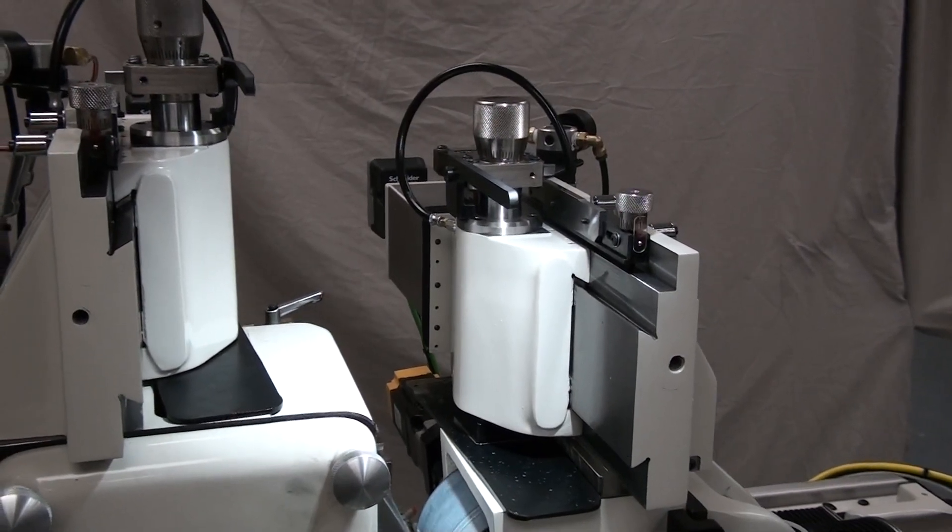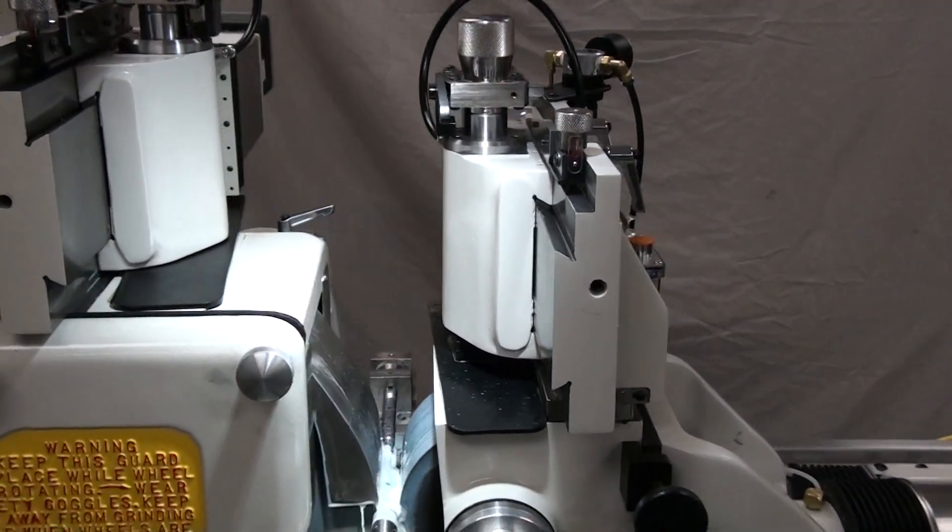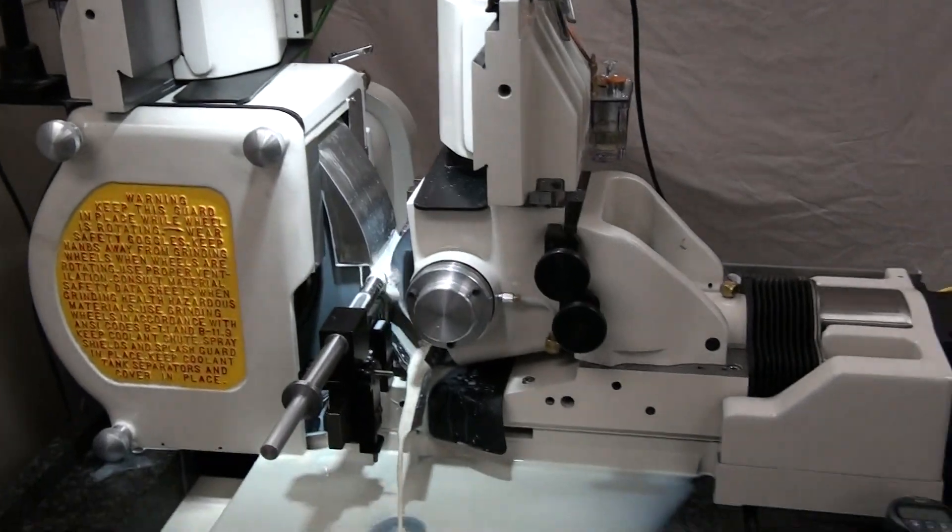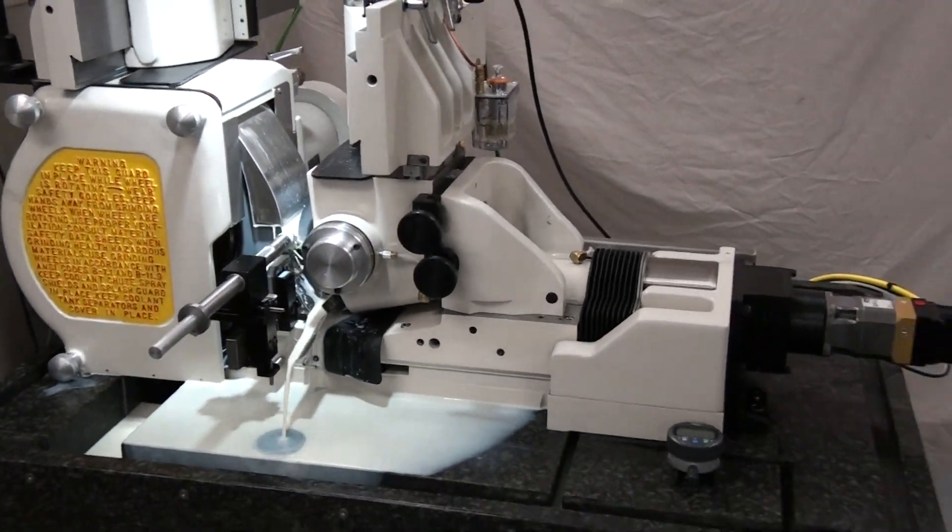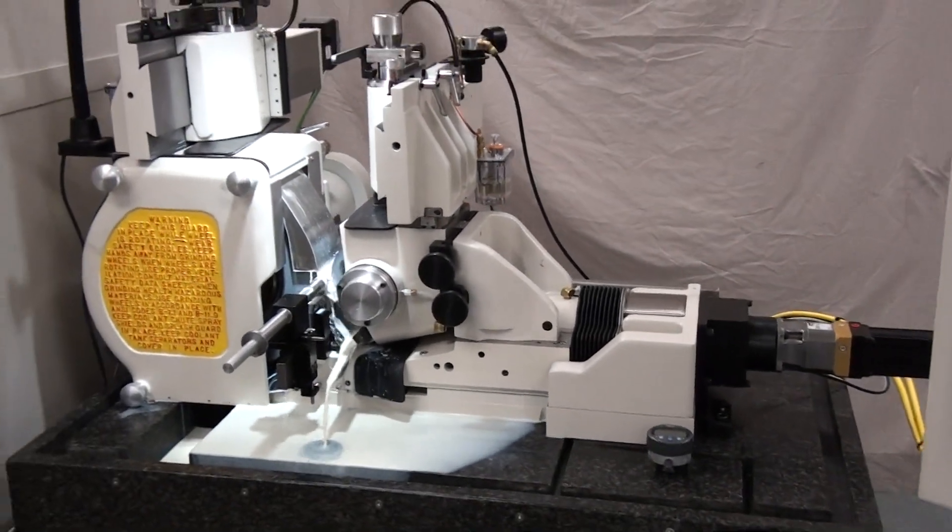Just program an increment and number of passes, and start the dresser. This allows the operator to tend to other activities during a changeover.